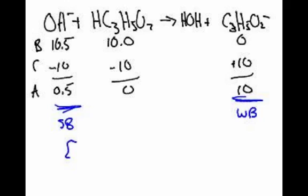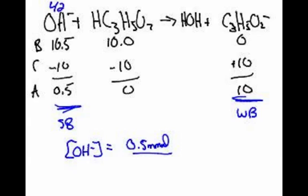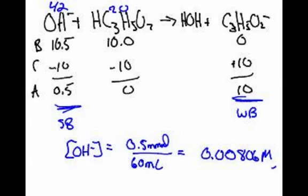You just take the concentration of the hydroxide, which will be equal to 0.5 millimoles divided by the total volume. What are our two volumes? We have 42 and 20, so divided by 62 — that's 62 milliliters. The molarity is 0.00806 molar. That's the concentration of hydroxide.